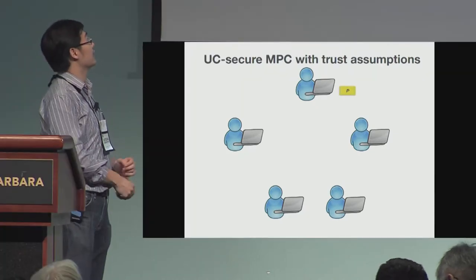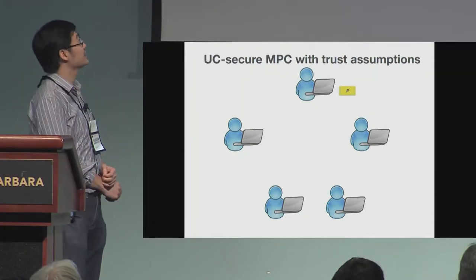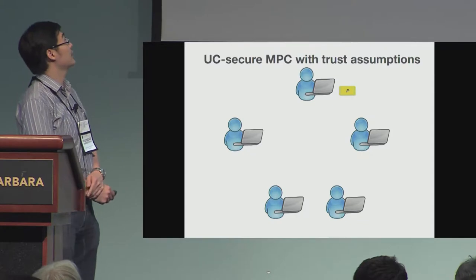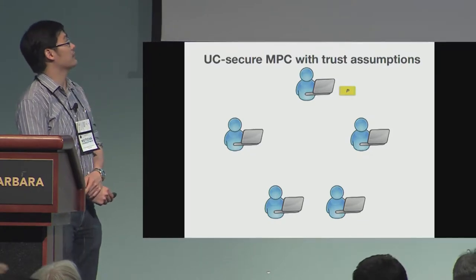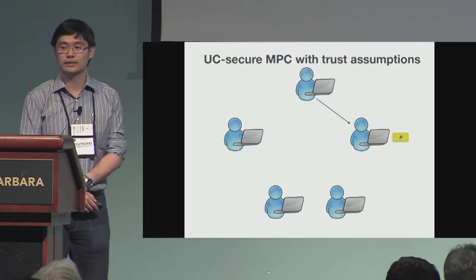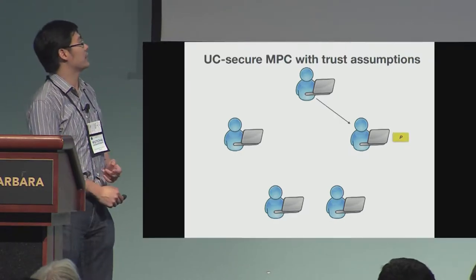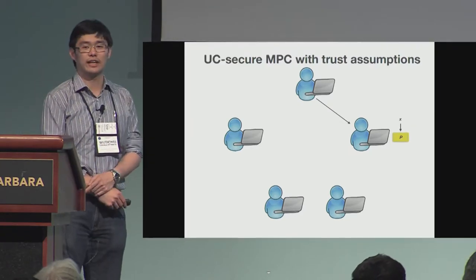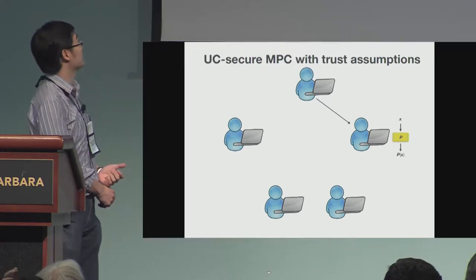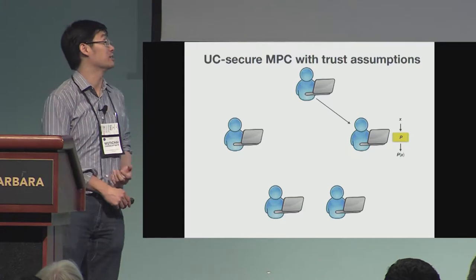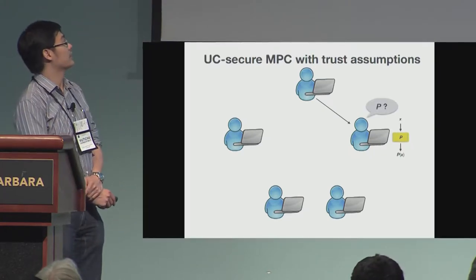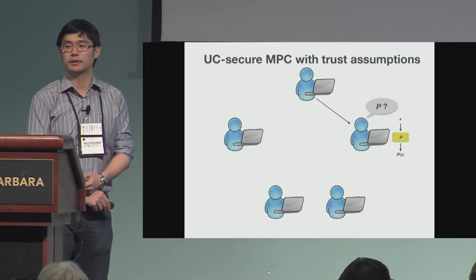Another trust assumption that we focus on in this talk is the tamper-proof hardware token. A party will come up with a program P, embed it in a token, and then send it to another party. The receiver of the token can execute this program P on any input they want, as many times as they want, without the sender knowing anything about this input or about the execution. At the same time, the receiver will not learn anything about the description of the program P.